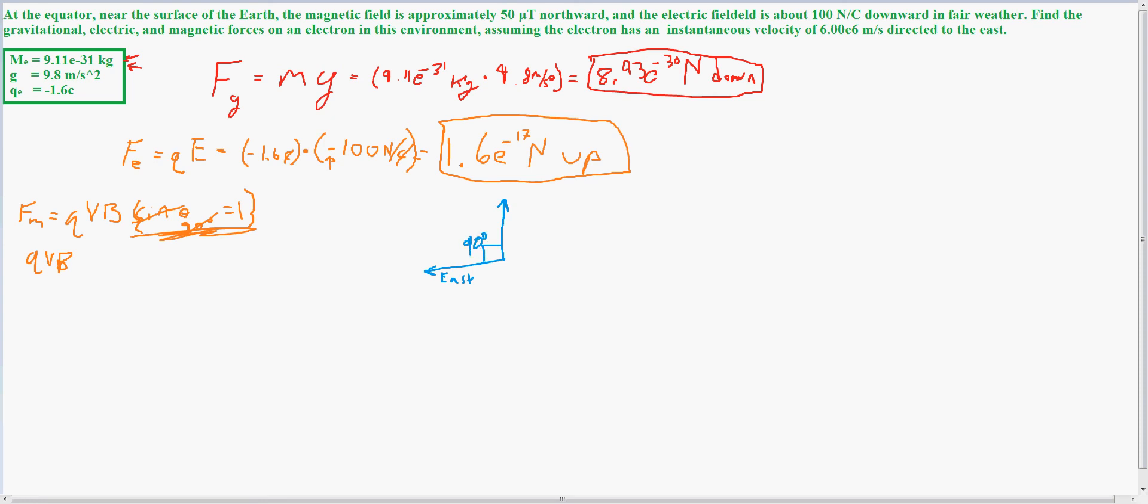Sorry for explaining that wrong. But okay, so now what we have is qvB is equal to Fm, and we have q, which is negative 1.6 coulombs,